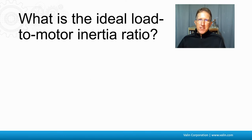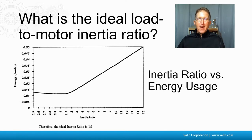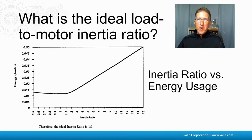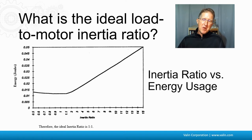That brings us to the question: what is an ideal load-to-motor inertia ratio? Based on a long calculation about energy usage, the ideal ratio is 1 to 1. The problem is that targeting 1 to 1 usually results in a motor that's way too big for most systems. So you're not really going to hit 1 to 1 unless your load is really small.